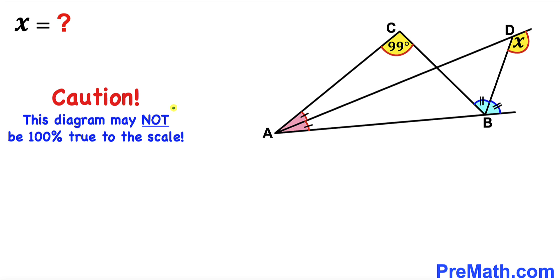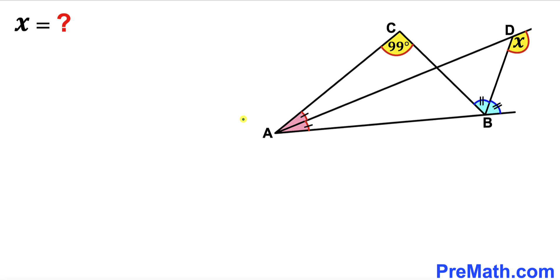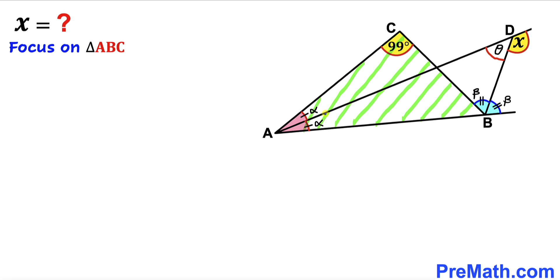Please keep in mind that this figure may not be 100% true to scale. Let's get started. We know that the two pink angles are congruent, so I'm going to label them both as angle alpha. Likewise, the two blue angles are congruent, so I'll label them both as angle beta. Finally, I'm going to label this angle as theta.